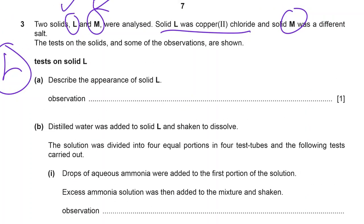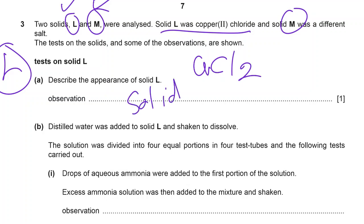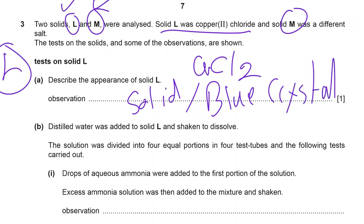Your compound L, which is copper chloride — describe the appearance of solid L. Keep in mind that most compounds of copper are blue, pale blue, or dark blue. So the appearance of this solid is blue crystal. The appearance of copper chloride is a blue crystal.